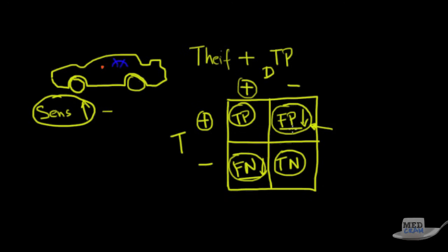Depending on what you're testing for and the situation, you may want to set the sensitivity to different levels. For instance, in a very high crime area where cars are stolen daily and there aren't many motorcycles, set the sensitivity high. If you're in an area with no reported thieves but lots of motorcycles going by, set it low. The same principle applies to medicine.